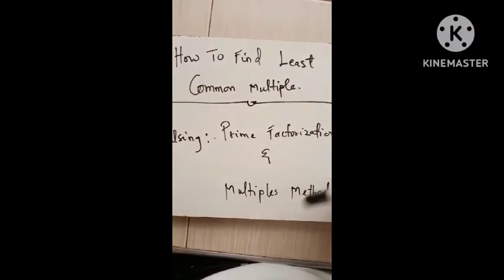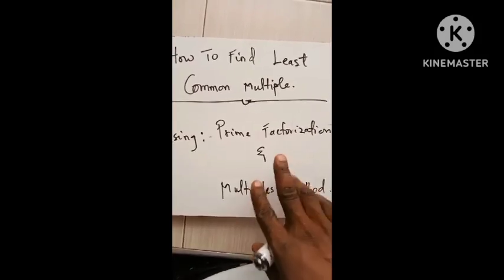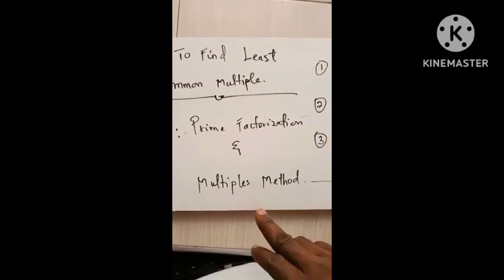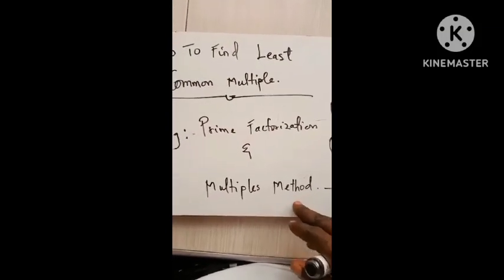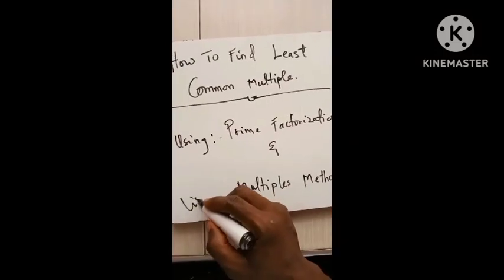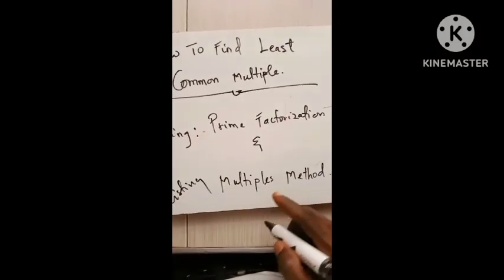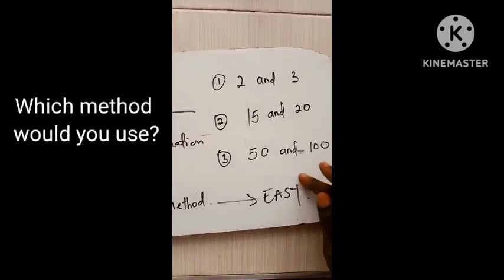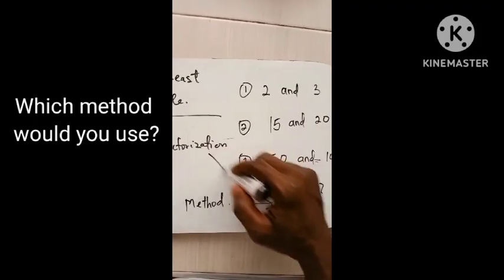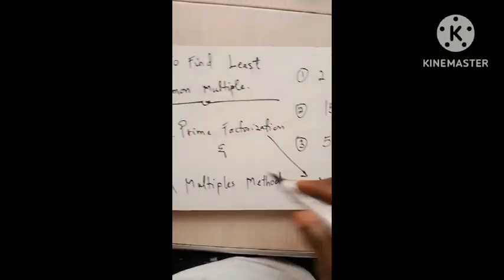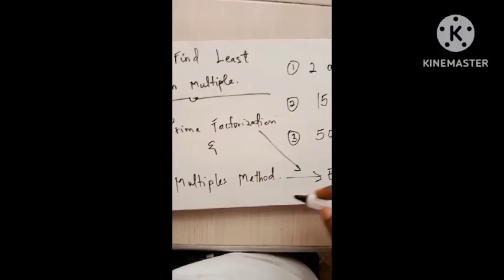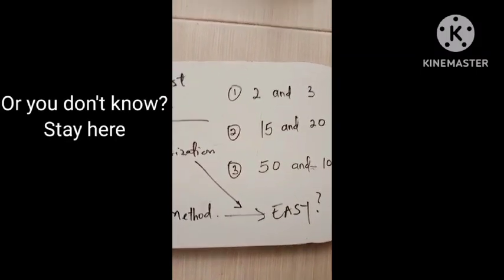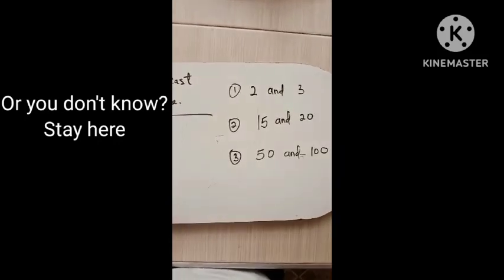In this video we are going to discuss two methods: using the prime factorization method, and the listing multiples method. Which one is going to be easy? That is a question for you to answer at the end of the video. Here are some of the questions that we will discuss: question one, question two, and question three.